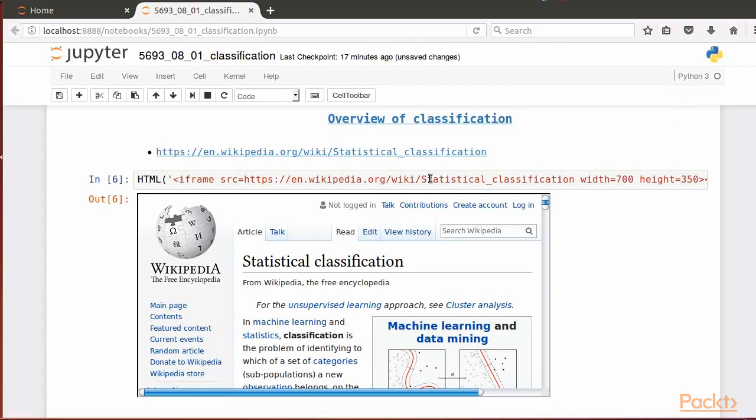Previously, we studied regression problems, on which we could describe the relationship between a response or dependent variable and one or more features. The dependent variable takes continuous values.